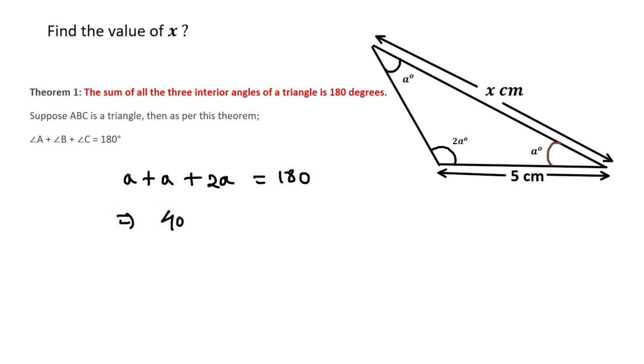This gives us 4a = 180 degrees, so a = 45 degrees. The two angles become 45 degrees each, and the angle 2a = 2 × 45 = 90 degrees.